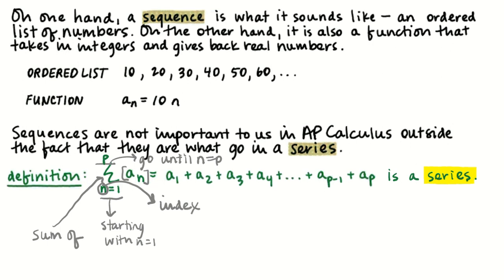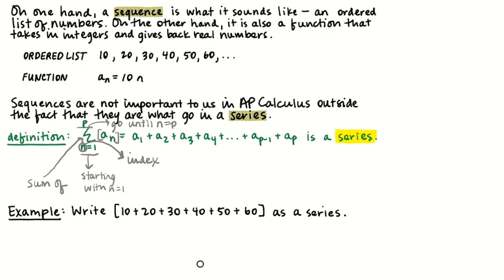To put it back into the counting-by-tens example: if we wanted to write this as a series using the formula a_n equals 10n, we'd start with our large sigma operator. It starts where n equals 1 and goes all the way up to n equals 6, since the terms are 10, 20, 30, 40, 50, 60. The things we're adding together are given by 10 times n.